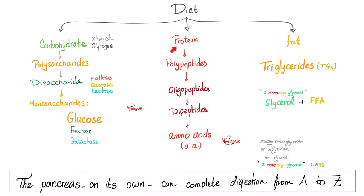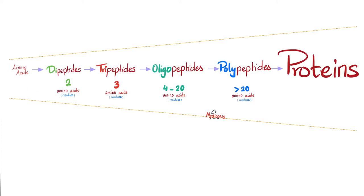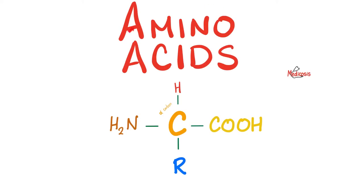When proteins get metabolized, they become amino acids. Amino acids are the building blocks of proteins. Why do we call them amino acids? Because they have an amino group and a carboxylic acid group — amino acid.